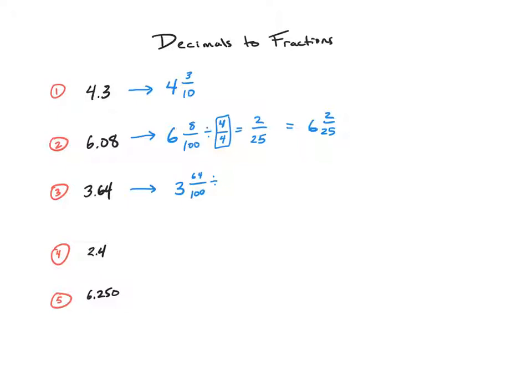Sixty-four and one-hundred both share a common factor, and they may share multiple common factors, but I know that four goes into both of them. Sixty-four divided by four is sixteen, and a hundred divided by four is twenty-five. So three and sixty-four hundredths is the same thing as three and sixteen-twenty-fifths.